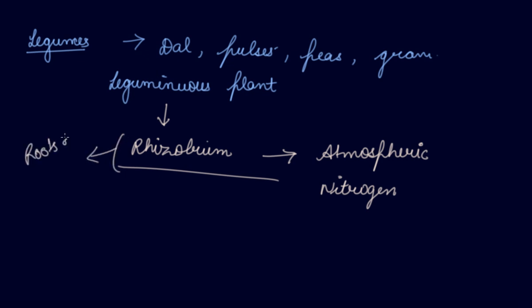Rhizobium cannot make its own food, so it lives in the roots of leguminous plants. Plants like gram, peas, and moong provide it with food and shelter, and in return it provides them with nitrogen. This is the reason legumes are a high source of protein.